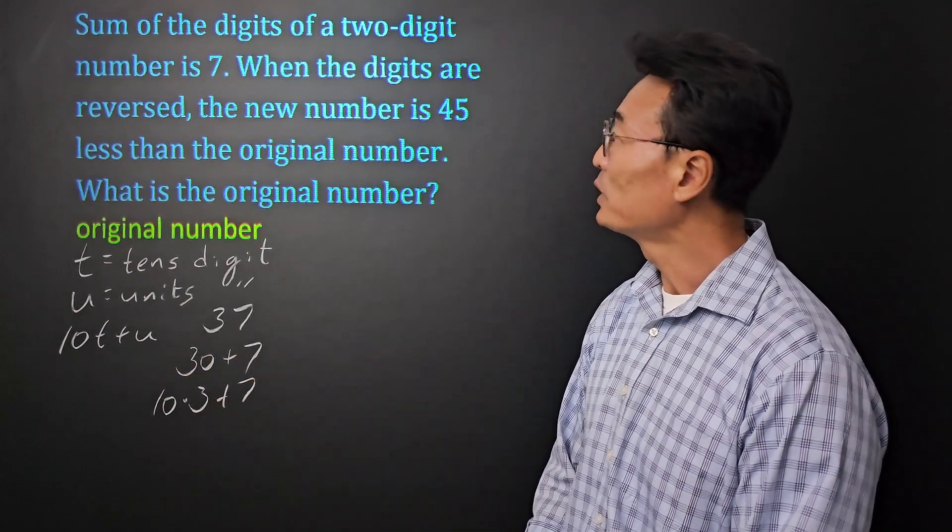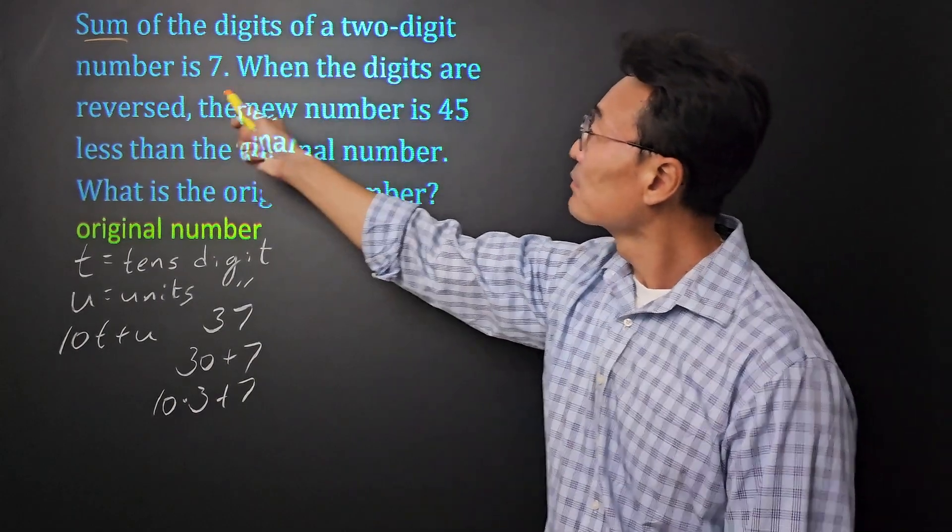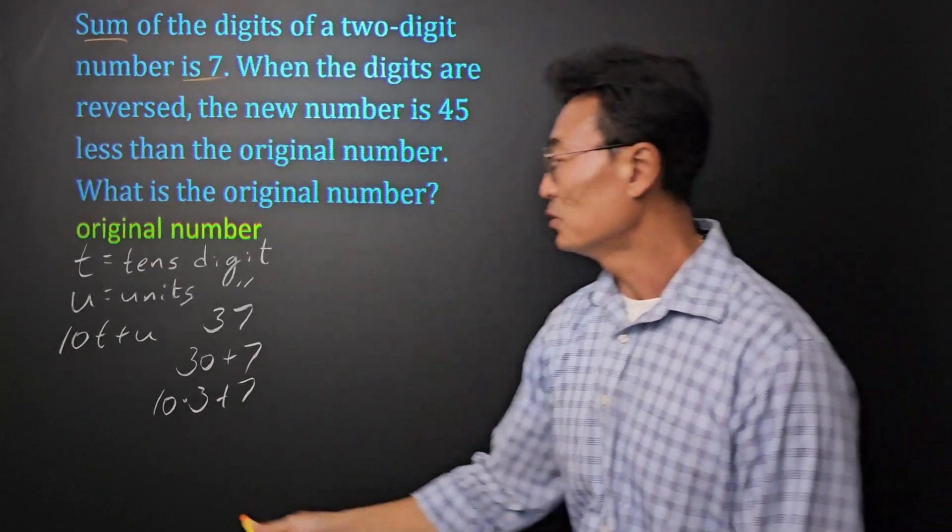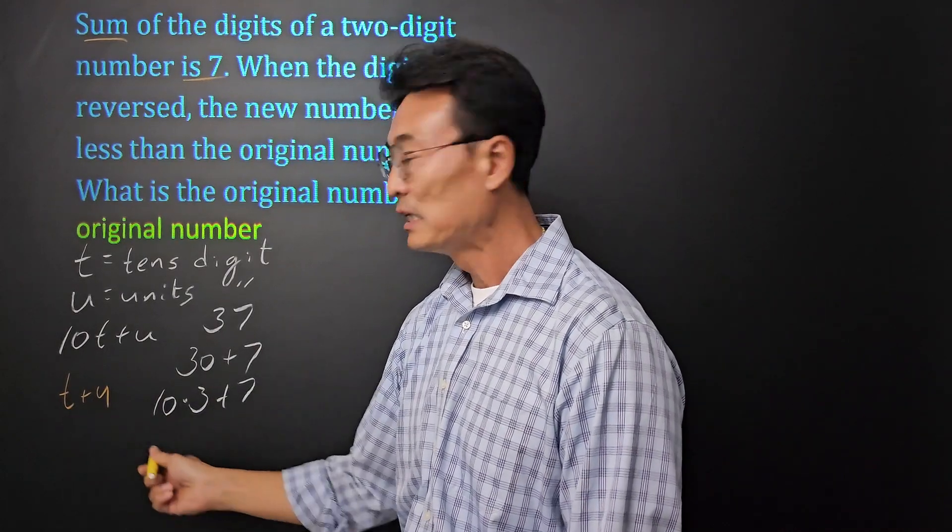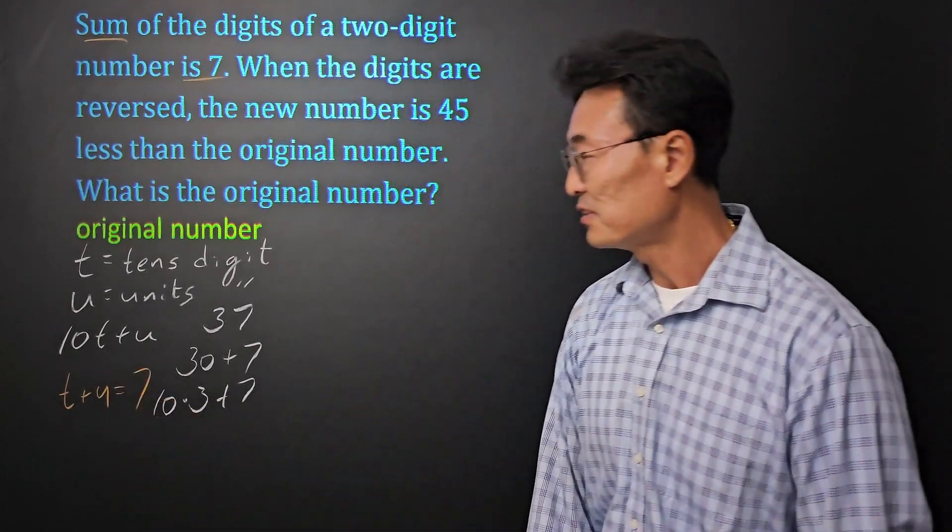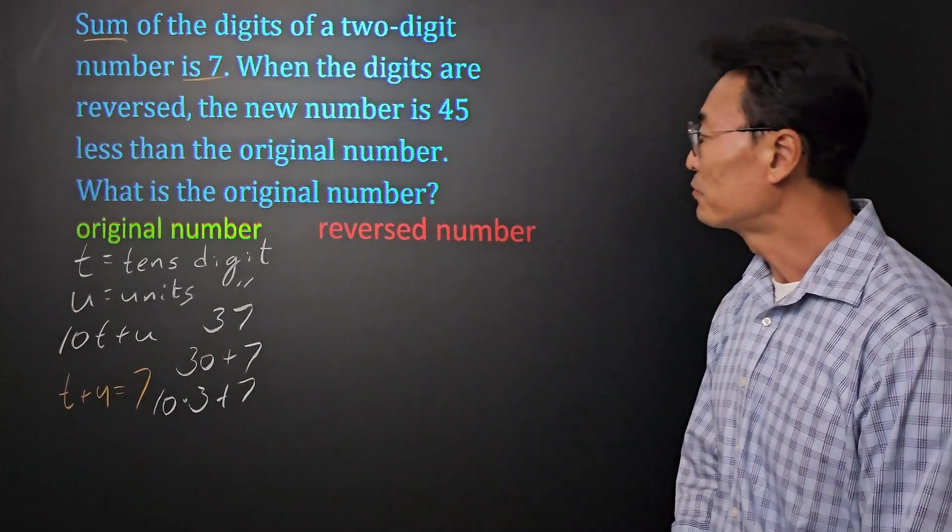And then the question says the sum of the digits is 7, so we're going to let t plus u, the two digits, add up to 7, and that's going to be our first equation.